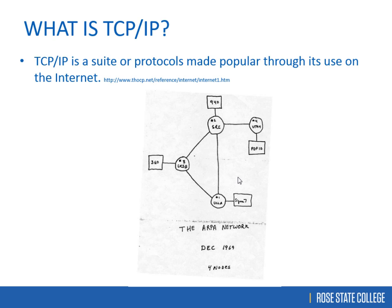TCP/IP is actually not the fastest protocol suite out there. IPX/SPX is much faster, but it was not the main standard — IPX/SPX was used on Novell Linux systems. TCP/IP became the standard. Apple used to use AppleTalk, so there were many different protocols back in the day.